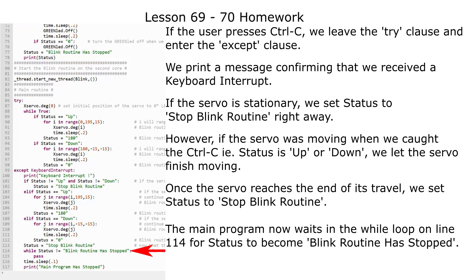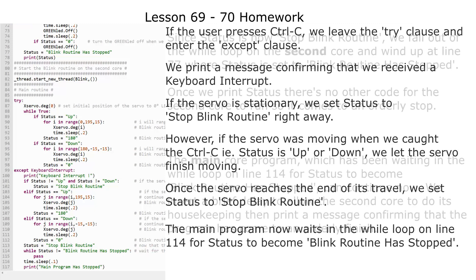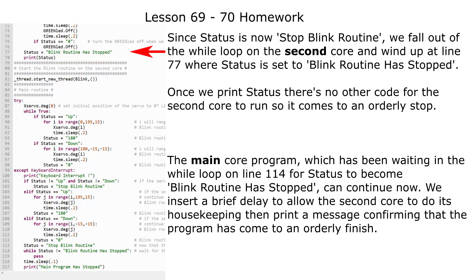The main program now waits in a while loop on line 114 for status to become blink routine has stopped. Since status is now stop blink routine, we fall out of the while loop on the second core and wind up at line 77, where status is set to blink routine has stopped. Once we print status, there's no other code for the second core to run, so it comes to an orderly stop.